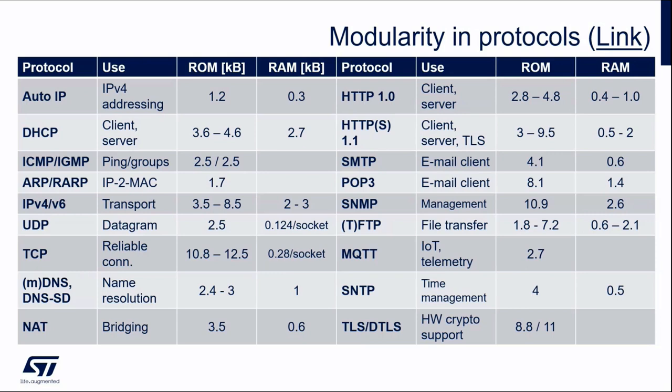NAT (Network Address Translation) is supported, allowing your device to modify IP addresses — useful if you want to implement a kind of router. SNTP is supported, which is a simplified version of NTP based on UDP. It's used, for example, by FileX to set the date when a file is created, so SNTP provides the timing needed for that.